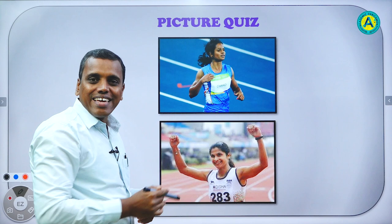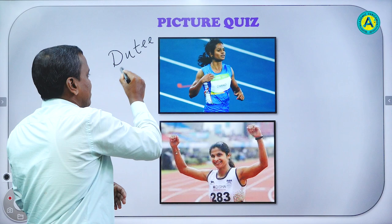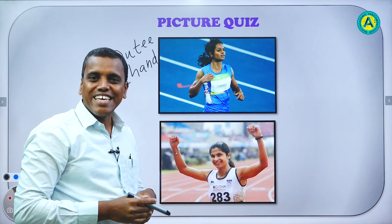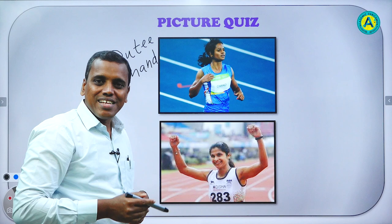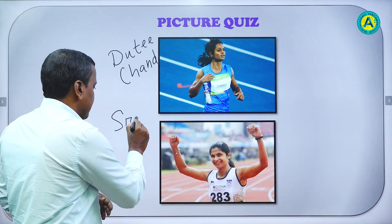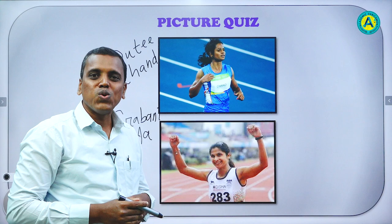This one is very famous Dutee Chand. She participated in the Olympic games for the 100 meter race. And look at the second picture. Who is she? She is also an Olympian. Her name is Sravani Nanda. She participated in 200 meter running.